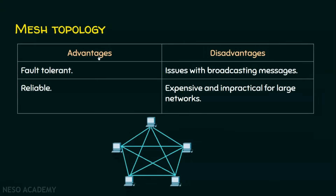The advantages of mesh topology: it is fault tolerant, meaning a failure will not bring down the network. You can rely on this network because your data will always reach the destination even if there are link failures. The disadvantages: broadcasting is an issue because a broadcast reaches all nodes and those nodes may forward the same broadcast back to the sender. Since mesh topology involves many links, it is expensive. It works fine for smaller networks but is impractical for networks with 1000 or more computers.